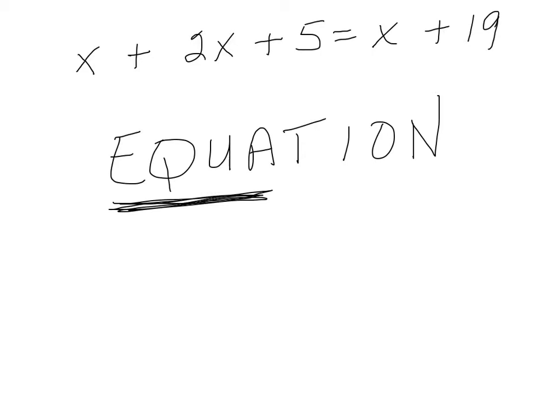So whenever we see an equation, we know that someone has already set this up so that both sides are balanced. You can think of the balance beam and the scales, and you know that this side and this side are both equal. It's already been balanced. That's why it's called an equation.